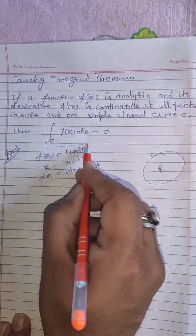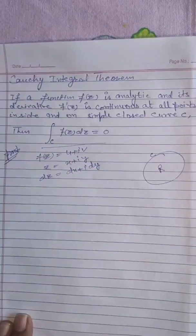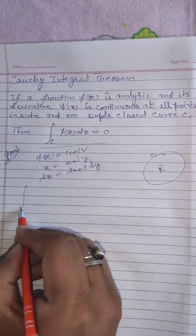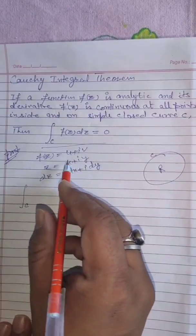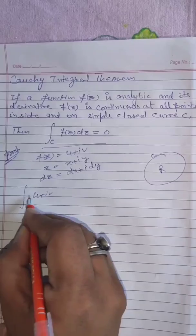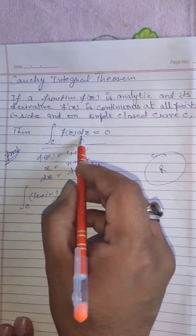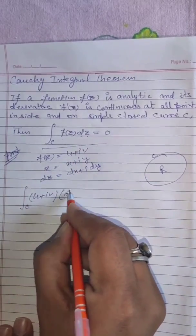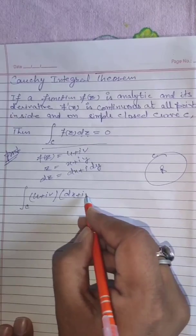So as per the theorem, the left-hand side of this integration over c: what is the value of f(z)? We are taking u plus iv, and what is dz? Here dz is dx plus idy.